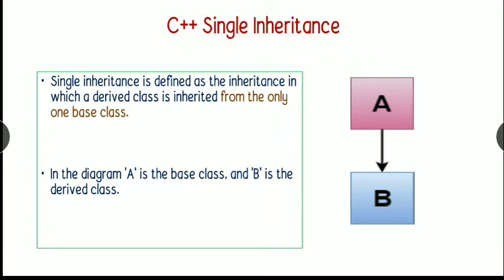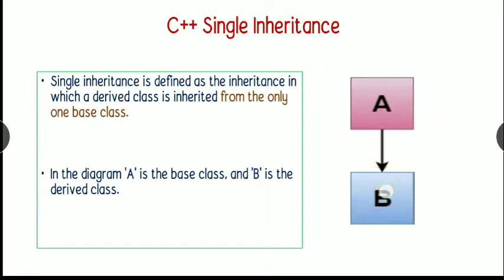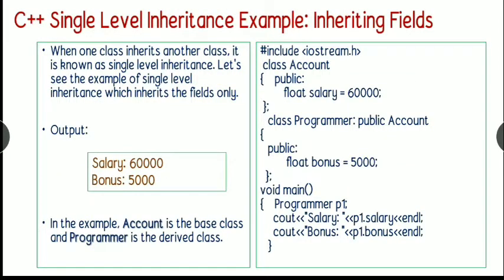The first type is single inheritance. It is defined as inheritance in which a derived class is inherited from only one base class. Here the diagram shows A is the base class and B is the derived class. When one class inherits another class, it is known as single inheritance. This example shows how the fields of the class can be inherited.